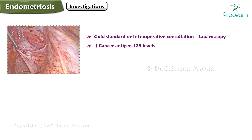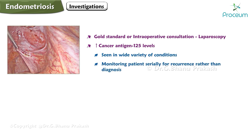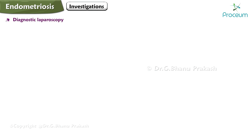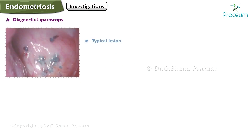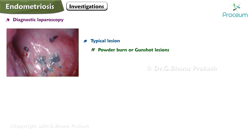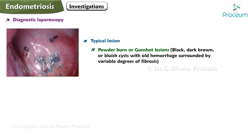Investigations: the gold standard investigation is laparoscopy. CA-125 levels are raised in endometriosis but, since many conditions elevate these levels, its greatest use is in monitoring patients serially for recurrence rather than diagnosis. Monocyte chemotactic protein levels are also raised in the peritoneal fluid of women with endometriosis. On diagnostic laparoscopy, typical lesions include powder burn or gunshot lesions — dark brown or bluish cysts with old hemorrhage surrounded by fibrosis.